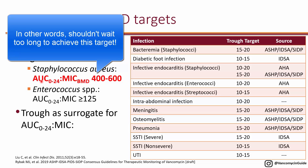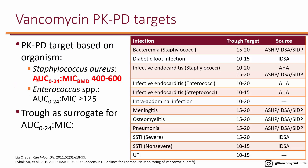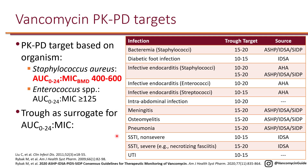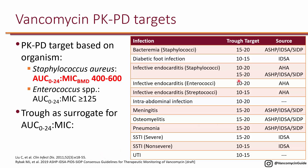Historically, it has not been practical to calculate AUC, so many guidelines used trough as a surrogate for AUC-to-MIC. The 2011 guideline used trough targets — 15 to 20 for severe infections, and 10 to 15 for less severe infections such as diabetic foot infection. However, the 2020 guidelines do not recommend targeting trough; they recommend targeting AUC-to-MIC of 400 to 600, and only make recommendations for severe infections due to insufficient evidence for non-severe infections.